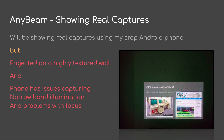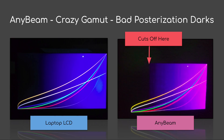I'll be showing some real captures here, projected on my wall. Unfortunately my wall is highly textured, and I took the captures with a bad Android phone that has issues capturing narrow-band illumination and has problems with focus. And YouTube is going to compress all this again, so I'm sorry if the images didn't turn out too well. AnyBeam has a crazy gamut — you can see a big difference in the same picture captured on two different displays with the same camera. The laptop LCD is on the left side and the AnyBeam is on the right. The AnyBeam background appeared purple throughout, and there's some seriously bad posterization in the darks — a step function where all the low-end shadows get cut off and turn into black.